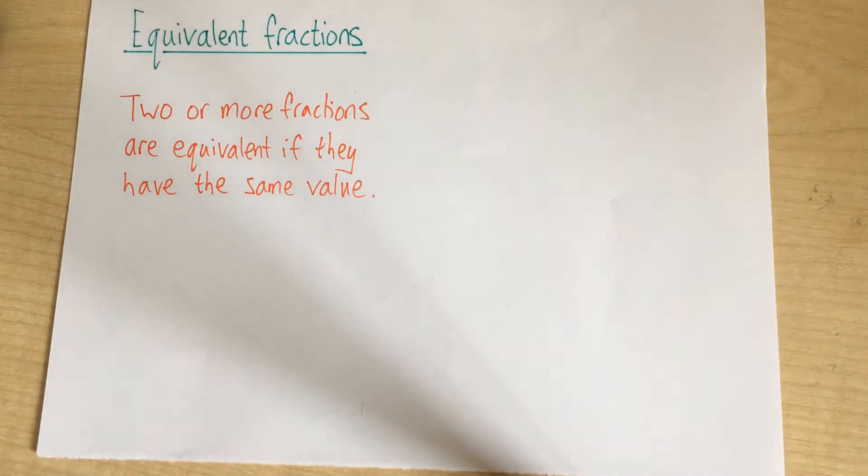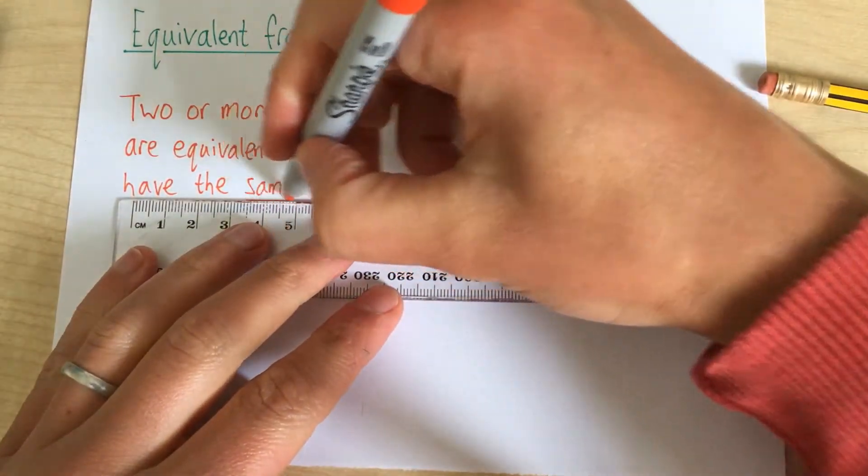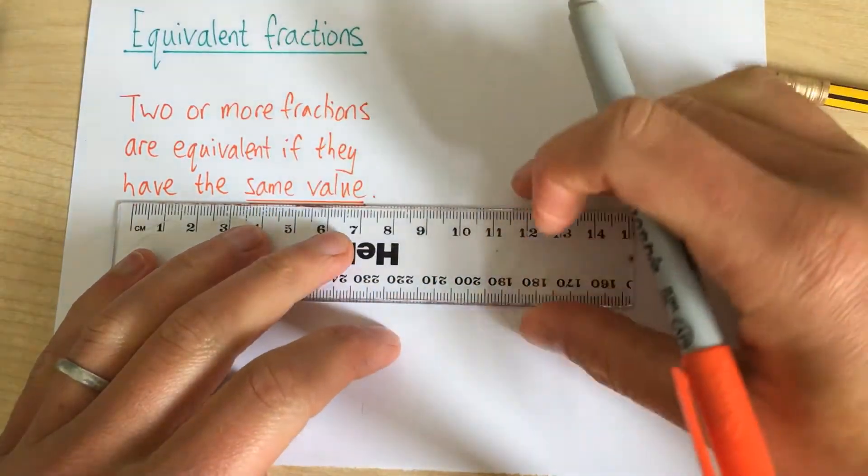Equivalent fractions. Two or more fractions are equivalent if they have the same numerical value. Let's underline that point there. The same value.